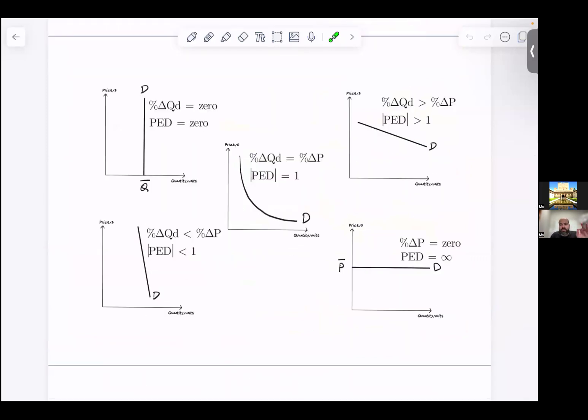PED is the responsiveness of quantity demanded to changes in price. The formula is percentage delta QD divided by percentage delta P – percentage change in quantity demanded divided by percentage change in price. If the percentage change in quantity demanded is equal to the percentage change in price, the absolute value of PED will be one. This means that demand is unit elastic.